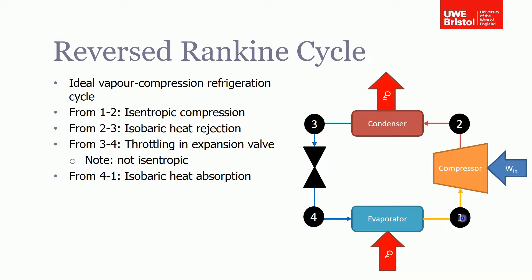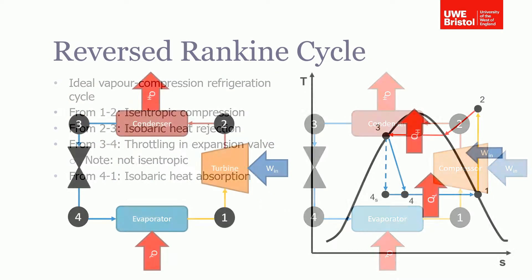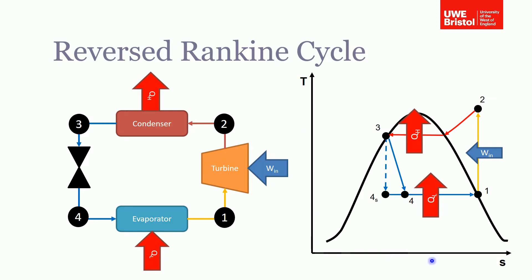In our analysis we assume the compression has 100% isentropic efficiency. There is isentropic compression, heat rejection, and heat absorption efficiency. Note that the throttling through the expansion valve cannot be treated as isentropic — due to the mechanism of expanding the gas, that process cannot be treated as isentropic. Here is the T-S diagram for the cycle.